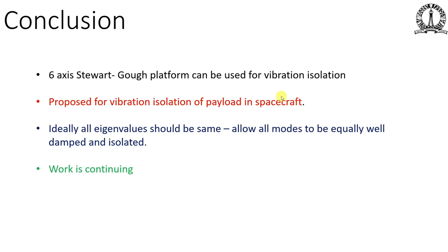The optimization yielded a ratio of maximum to minimum natural frequency of kappa = 1.6. Ideally kappa should be 1 so that all eigenvalues are equal, allowing all modes to be equally well damped and isolated. This was not fully achieved in the fabricated platform. Work is continuing to find configurations that bring kappa closer to 1, where all natural frequencies are very close to each other. This type of vibration isolation system can be used in spacecraft to isolate the payload.